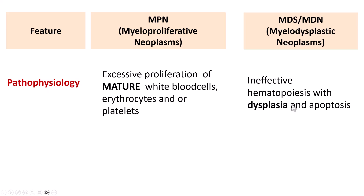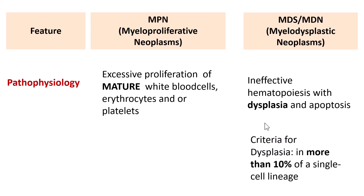In MDS, the cells are immature. The criteria for dysplasia require more than 10% of the cells to be dysplastic in any given cell lineage — whether erythroid, myeloid, or megakaryocytic. At least one lineage must show dysplasia of more than 10%. So, Myeloproliferative Neoplasms are proliferative without dysplasia, whereas Myelodysplastic Neoplasms, as the name says, are dysplastic.